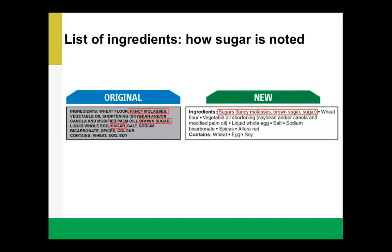One of the biggest changes to the new labels is how ingredients will be listed. On the left side of this slide, you'll see the original ingredients list, which is what you'll find on most packaged foods currently. In red boxes, you can see different names for sugar, such as fancy molasses or brown sugar. The new labels will make it easier to identify sources of sugar because all sugars will be grouped together — shown in brackets under the heading 'sugars.'